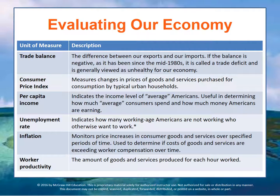The Consumer Price Index is another measure. It measures the changes in the prices of goods — it's a basket of goods representing average things people buy and how those prices go up and down based on consumption in urban households. Per capita income indicates the average income level for Americans, and is useful in determining how much the average consumer has to spend.